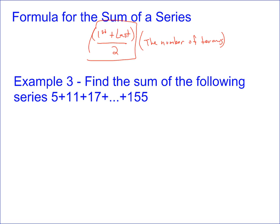So 5 plus 155 is 160, divided by 2. We need to multiply that times the number of terms. To do number of terms, we just do 5 plus 6x, because the difference is 6, equals 155.